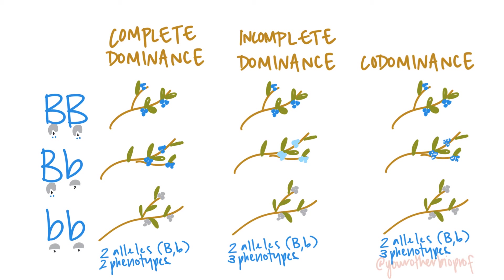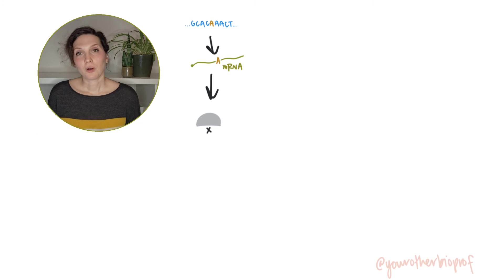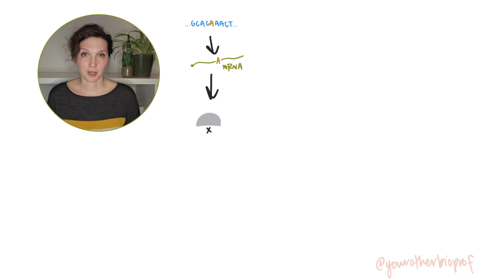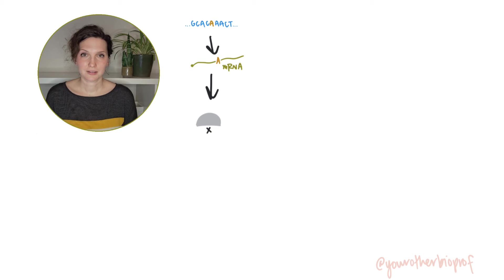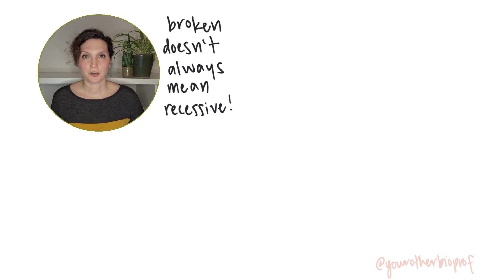Where we have the products of two different alleles present, the type of dominance is a reflection of how those products combine to produce a phenotype. The phenotype is a reflection of what's happening at the molecular level. Different alleles function and their products interact in different ways, and while it's common for alleles that produce broken or defective products to be recessive, that's not always the case.